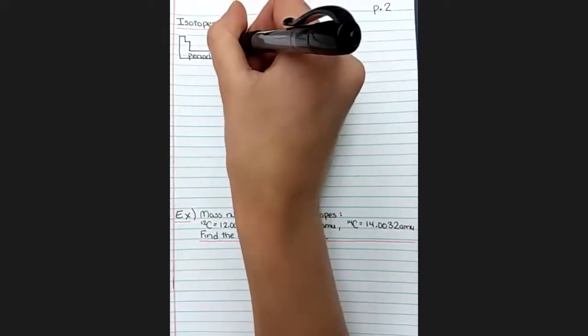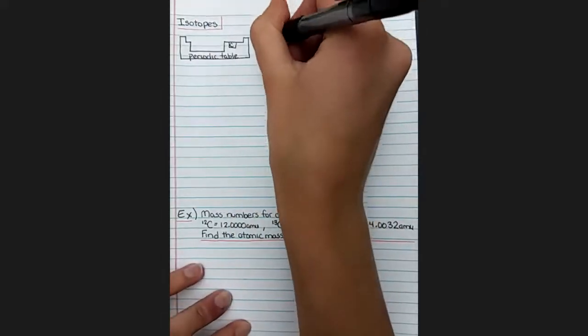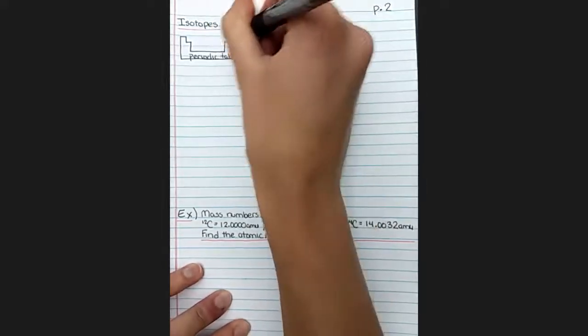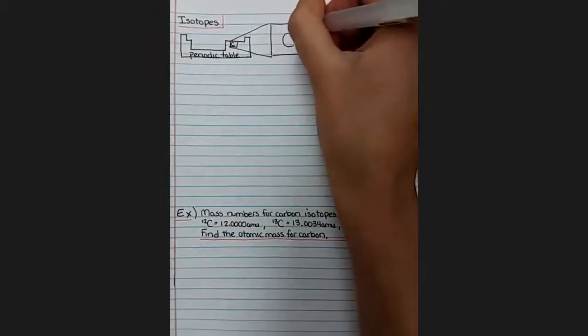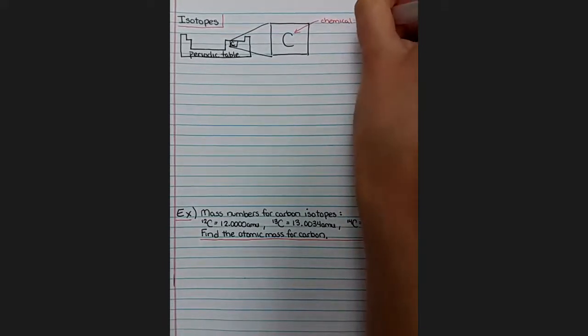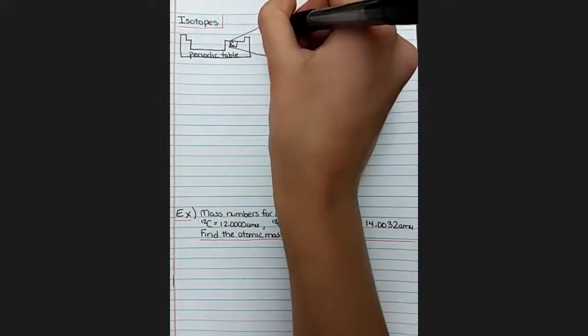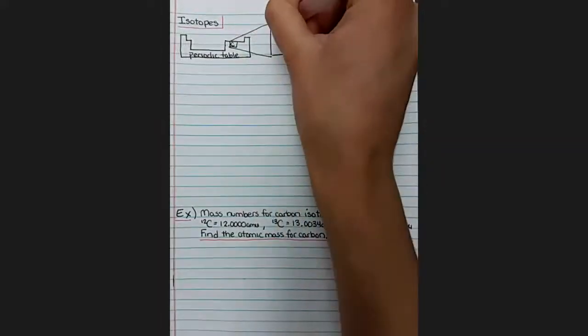If we look for the carbon in the periodic table, it's right about here. Let's blow that up. Here's the box. We recognize the C as the chemical symbol that we talked about in the last video. And we know that the number of protons that carbon has is six, and that's sometimes listed somewhere in the box in this periodic table that was at the top corner.